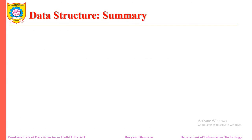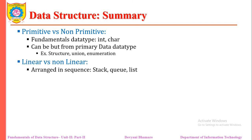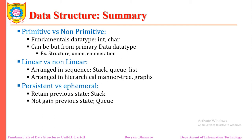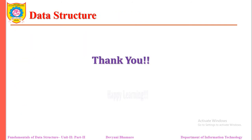To conclude, we have seen there are four types of data structure: primitive and non-primitive, linear and non-linear, persistent and ephemeral, and static and dynamic — where in static we need to allocate memory in advance, and in linked list we do not. Thank you students, happy learning.